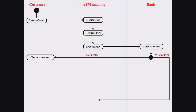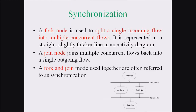Next is the synchronization notation. A fork node is used to split a single incoming flow into multiple concurrent flows, and a join node brings multiple concurrent flows back into a single outgoing flow. This fork and join used together is known as synchronization.